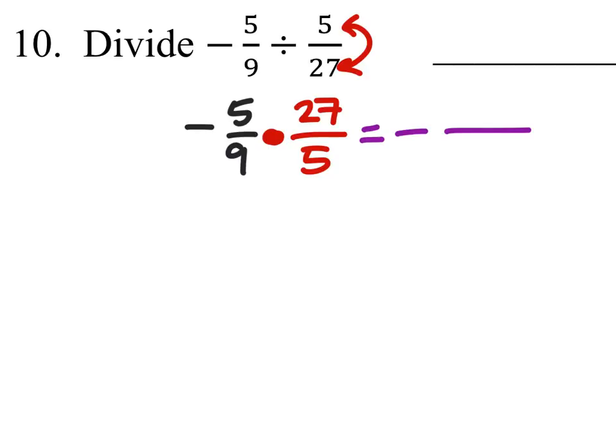Let's do 5 times 27. That's 135. And 9 times 5 is 45.